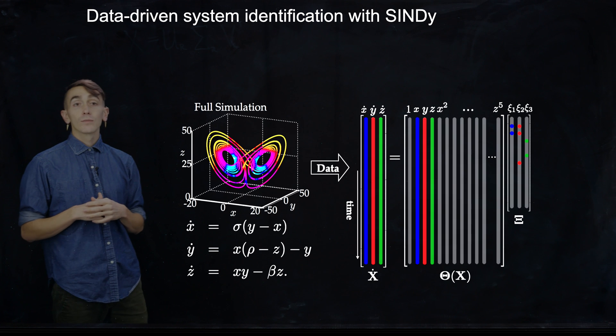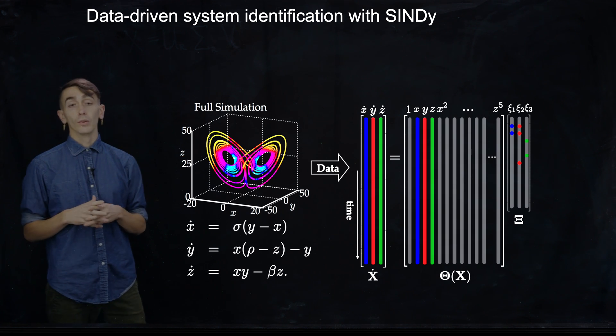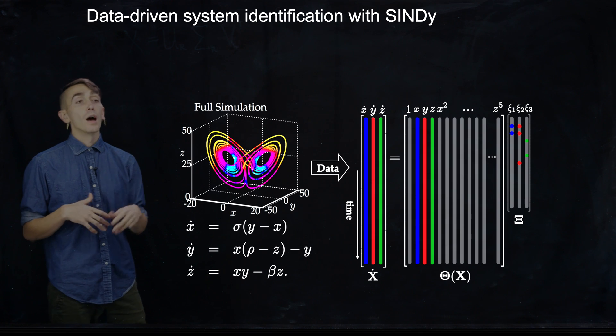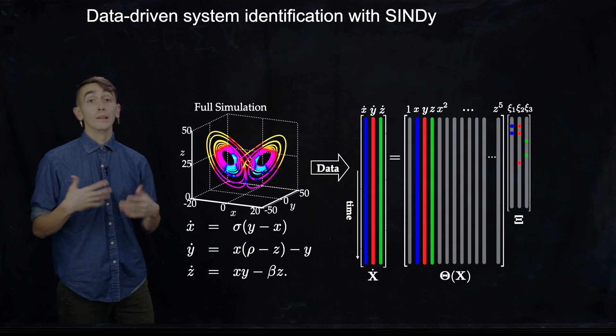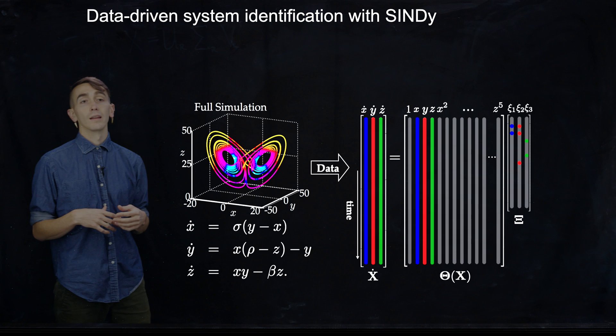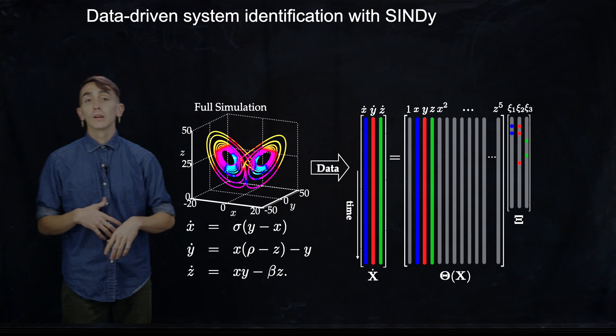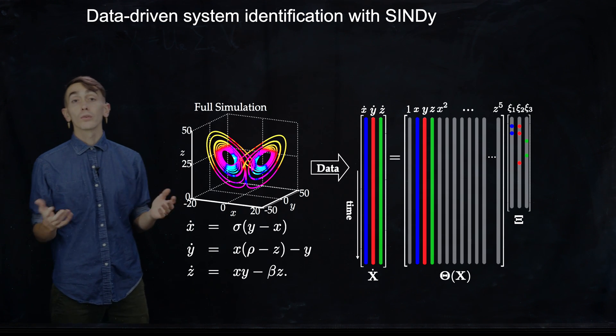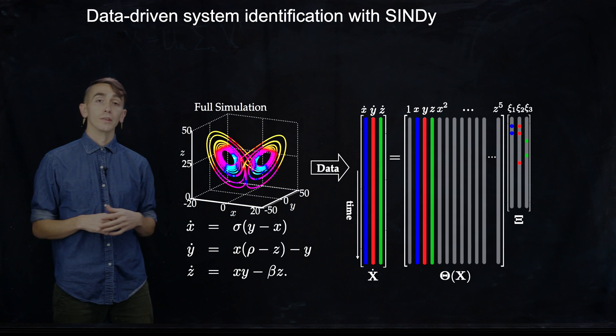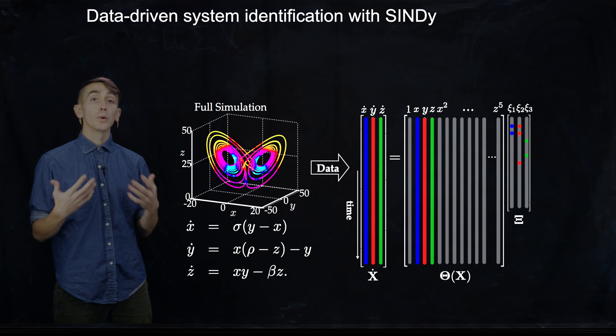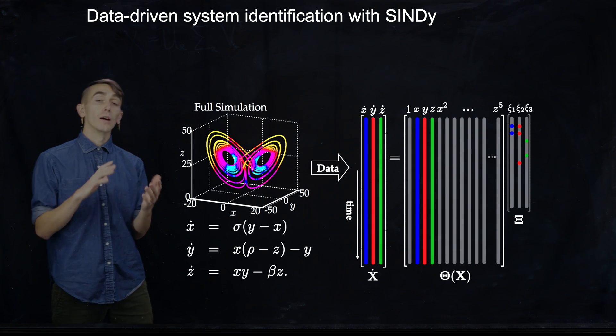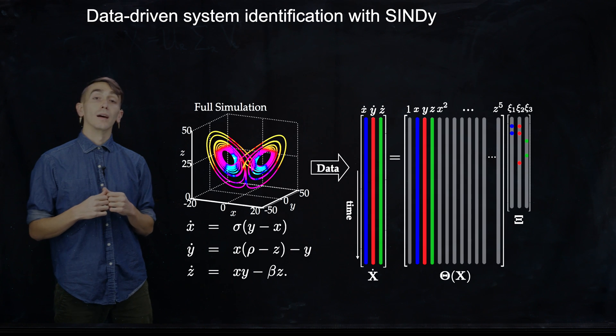And I want to emphasize here, so this candidate library is up to fifth order polynomials in x, y, and z. But you can put whatever nonlinear or linear functions that you want into this candidate library. Basically, you're building a huge number of possible models that could describe how your data evolves in time. And then you're performing sparse regression to figure out which model best fits the data.